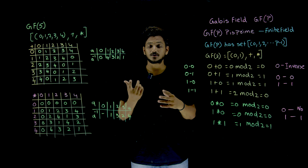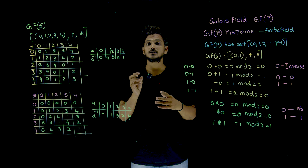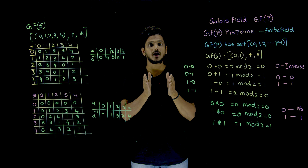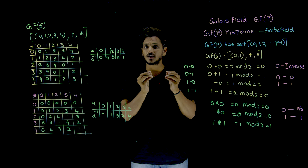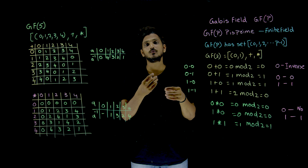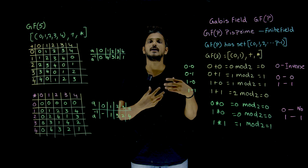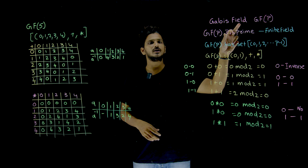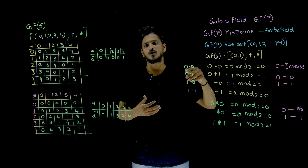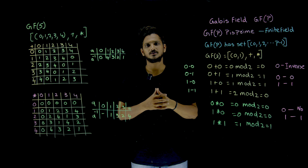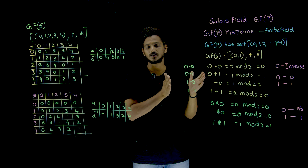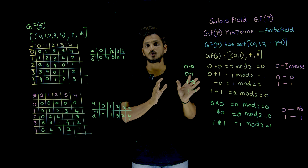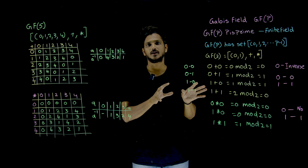In our last class we discussed what is meant by finite field. If the set contains a finite number of elements then we call it a finite field. Galois field is going to use the finite field concept — the set of elements is finite; it is not going to use infinite elements.